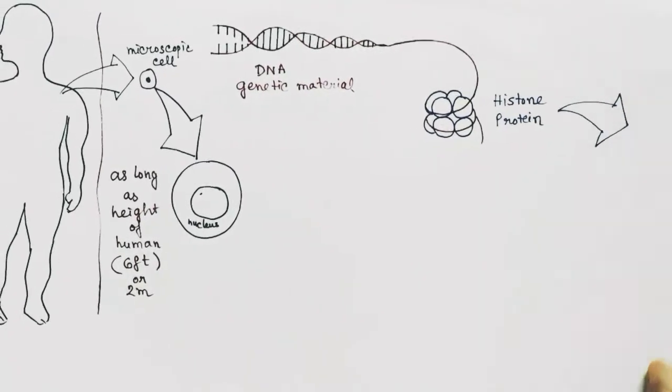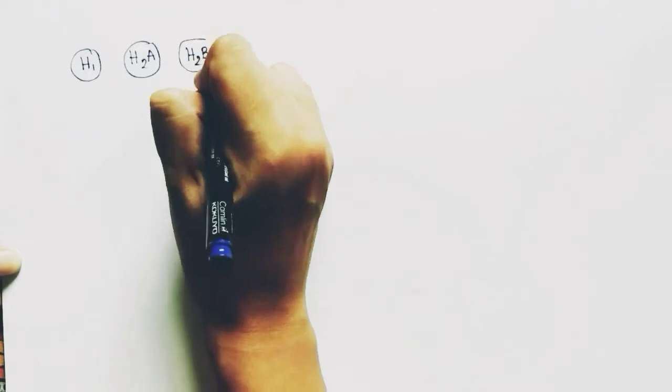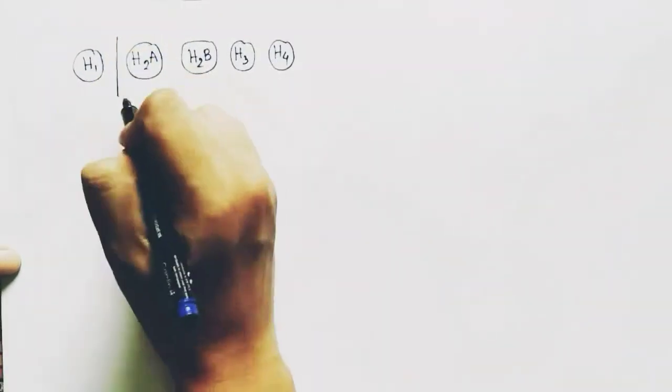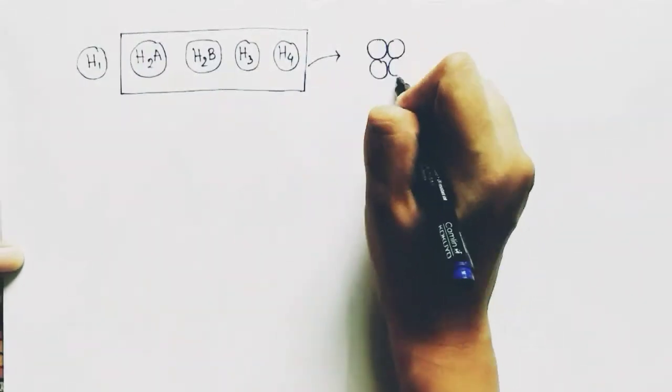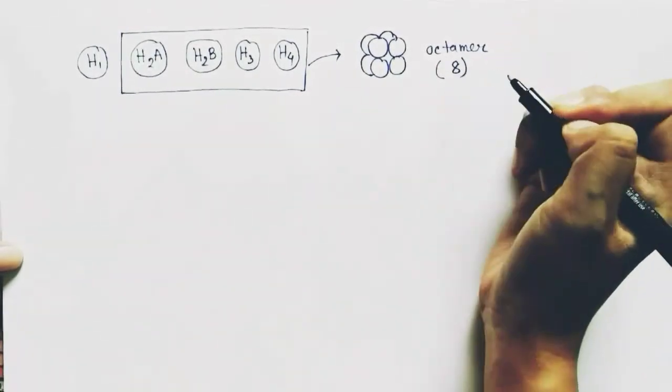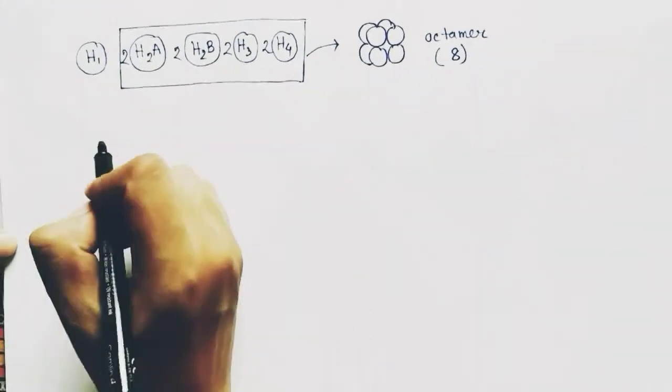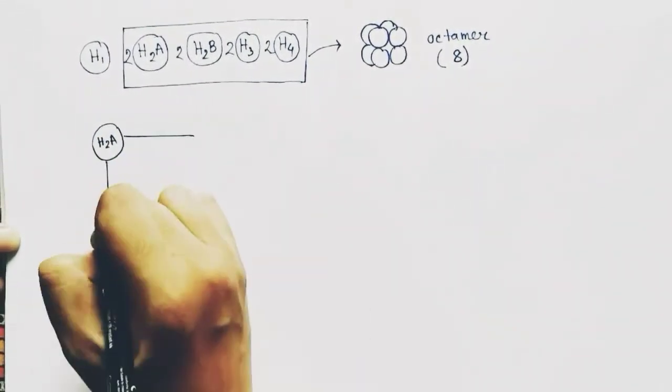The DNA strand wraps around these bunch of proteins, so let's learn about the histone proteins. There are five types of histone proteins involved: H1, H2A, H2B, H3, and H4. Except the H1, all four contribute to the formation of an octamer. Octamer means eight, that's why we need two of each. Now, how are they situated in the octamer?